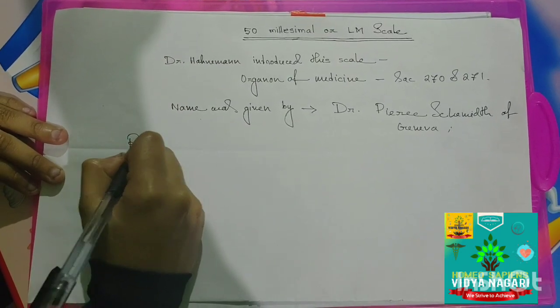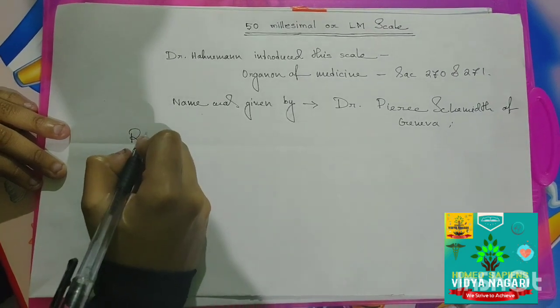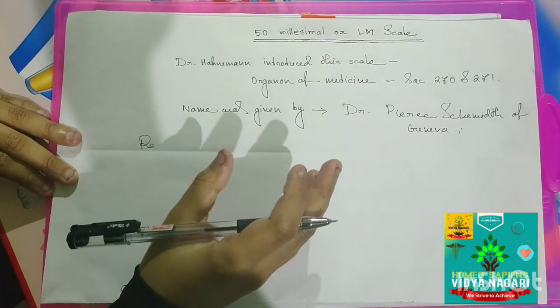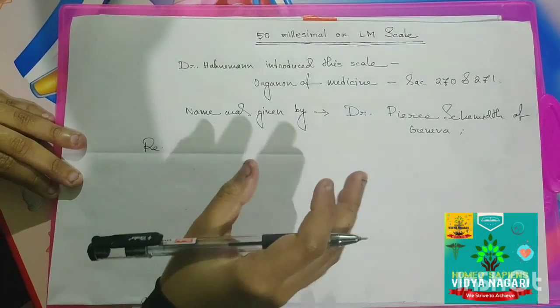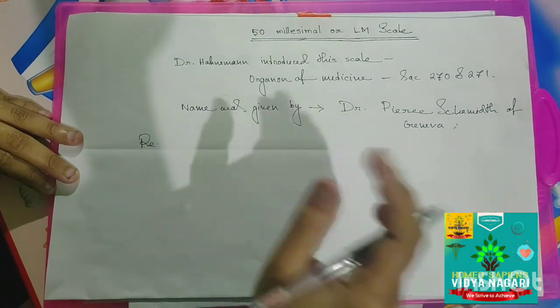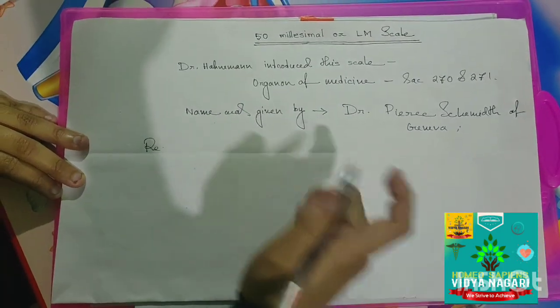The reason behind this name is that in the 50 millisimal scale, the drug material is decreased by 50,000 times in each potency, so it is called 50 millisimal potency.